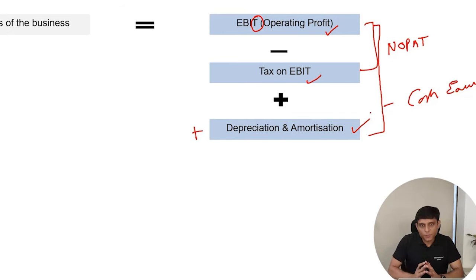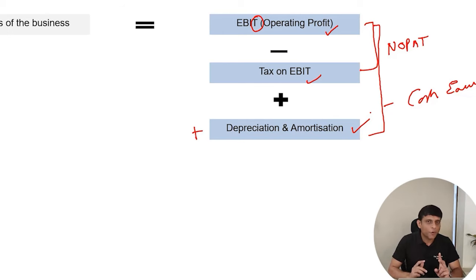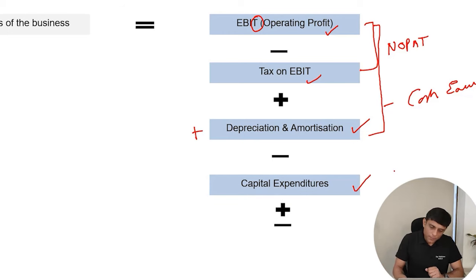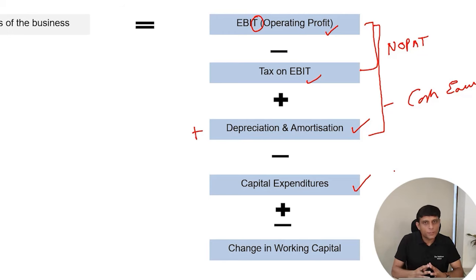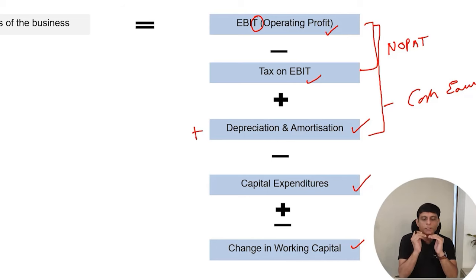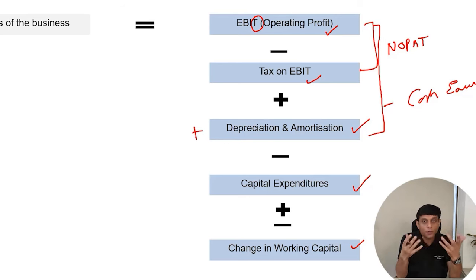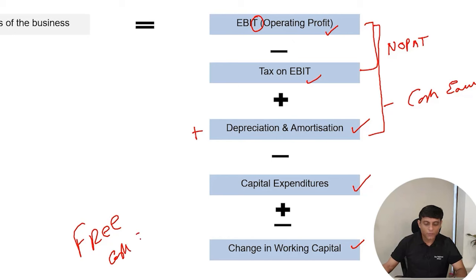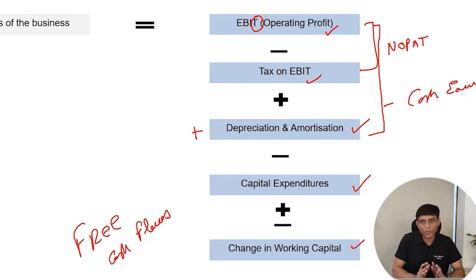From cash earnings, we first set off the reinvestment required in the business. The business needs reinvestment in the form of capital expenditure and working capital changes. So we subtract capital expenditure, and adjust for change in working capital — plus if working capital decreases, minus if more working capital is required due to growth. After all these adjustments, we get free cash flows to the business, which is available to the entire firm: debt, equity, and all other claim holders.